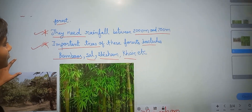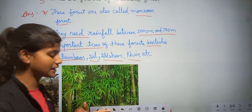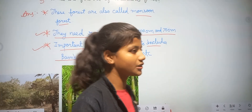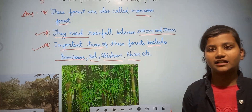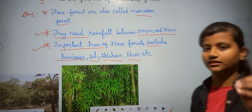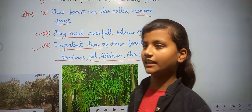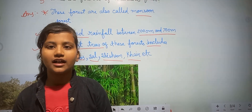In the deciduous forest, the important trees include bamboo, sal, shisham, and curry. There are many trees available in both the deciduous forest and the evergreen forest.